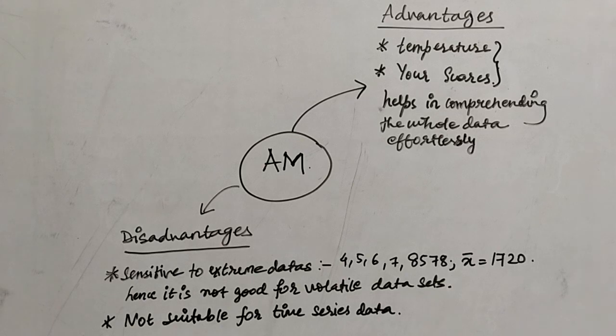Now here is the example. I have taken purposely 5 observations with 1 extreme observation and I have found out that the mean is 1720 which doesn't comprehend what the data is saying. Why? Because arithmetic mean is sensitive to extreme numbers or volatile data sets.